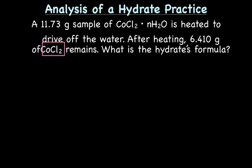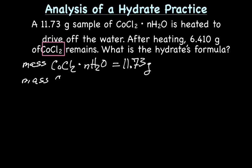So I'm going to start by making a list of everything I know. So I know the mass of my hydrate, CoCl2·nH2O is 11.73 grams. The mass of the anhydrate, cobalt-2 chloride is 6.410 grams.